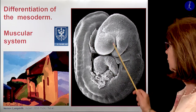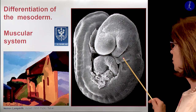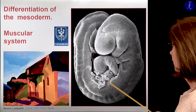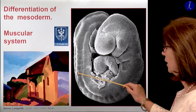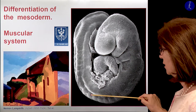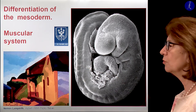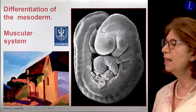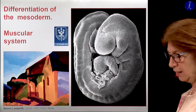Here you see an embryo: the head process, the pharyngeal arches — the first two pharyngeal arches — the heart primordium, and along the midline of the embryo up to the tail portion you see small units. These are parts of the paraxial mesoderm, the so-called somites, which here are covered with the ectodermal layer.